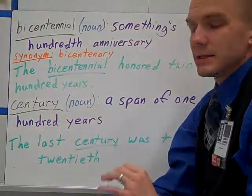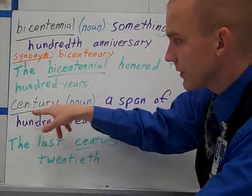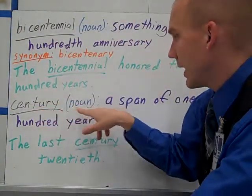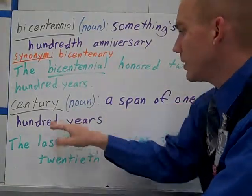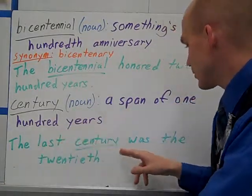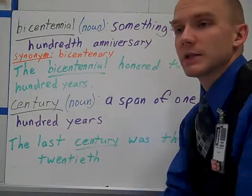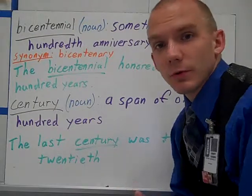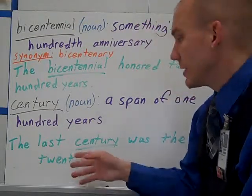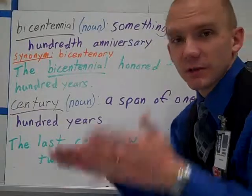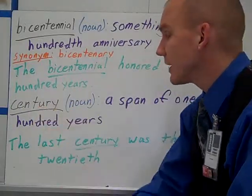Cent. I'm going to start with century first. Century is a noun — a span of 100 years. The last century was the 20th. It's the last 100 years, so it was what we call the 20th century. It's just the name for that specific span of 100 years.